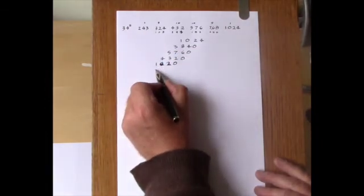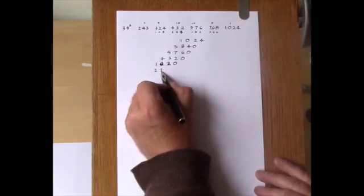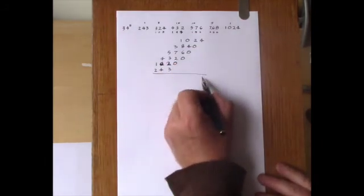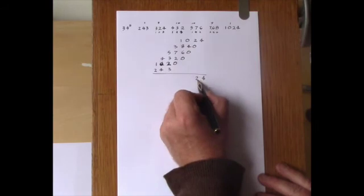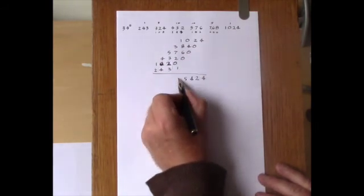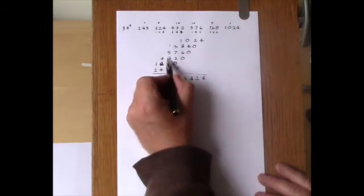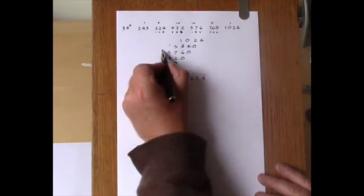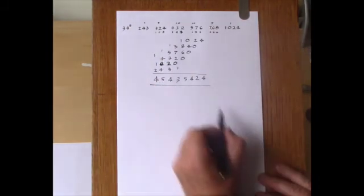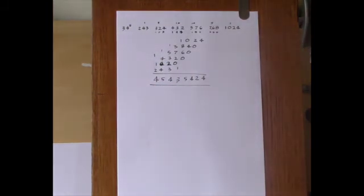Then we can add up for the answer. So we get 4, and then 2, and then 4, and then 15, and then 10, 13. And then 8, 10, 14, and 10, 15, and 4. And that's 34 to the power of 5.